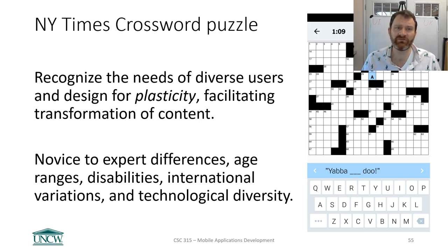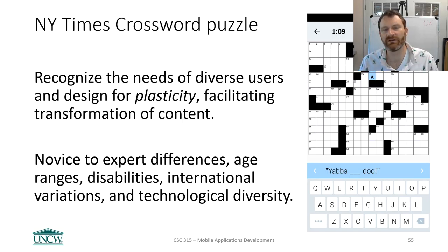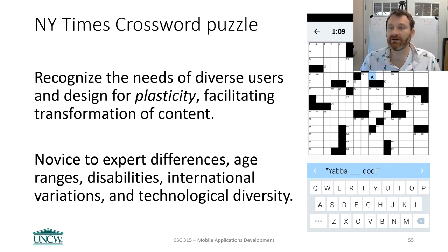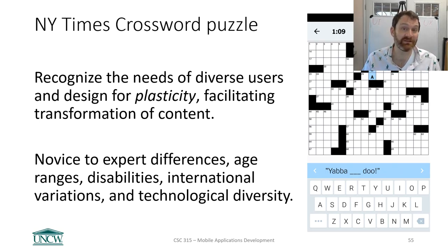Here's an example where that would be tricky: the New York Times crossword puzzle app. Imagine a person who cannot see — how do you make a crossword puzzle for a user who can't see? I don't know the answer to that. Maybe there's no good solution. A good idea would be to ask someone who cannot see how they do crosswords, or if they'd like to. It sounds good to design for a variety of people, but it's not always going to be possible.